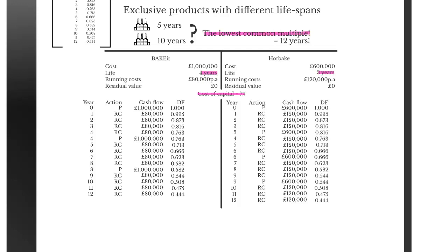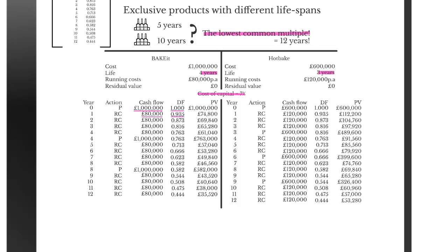We do that for both ovens and then calculate the present value — the present cost — of each cash flow. For the Bake-It in year zero, the cash flow is £1,000,000 and the discount factor is 1, giving a present cost of £1,000,000. In year one, the £80,000 running cost multiplied by the 0.935 discount factor gives a present value cost of £74,800. We repeat this process for each cash flow and discount factor for both ovens to get the total costs over 12 years.